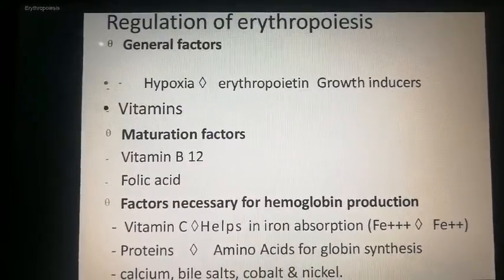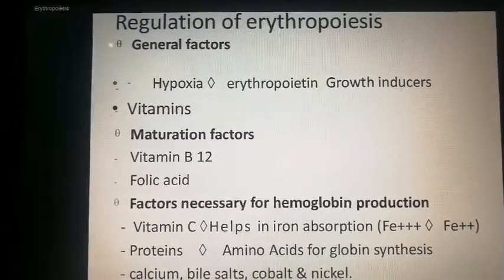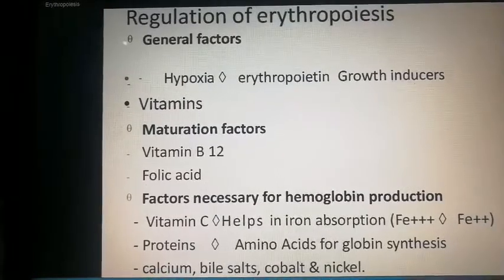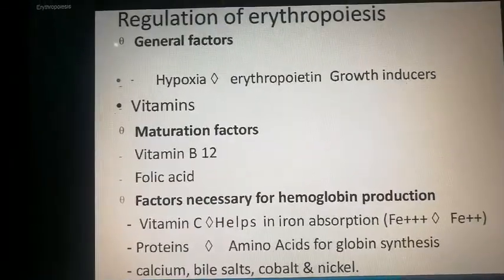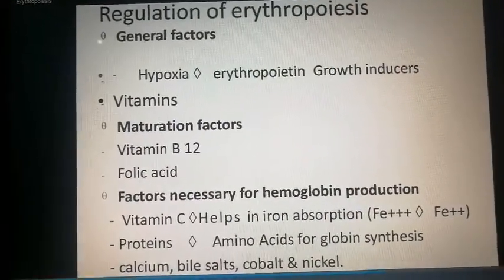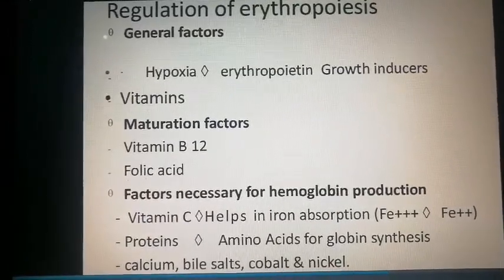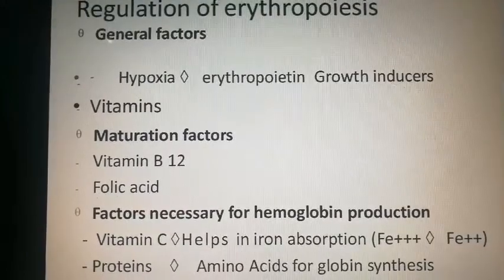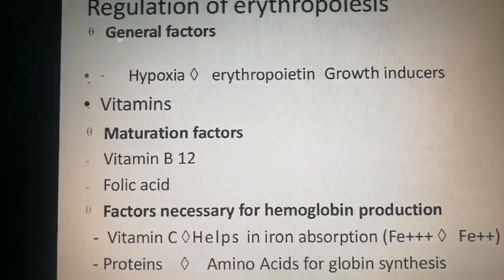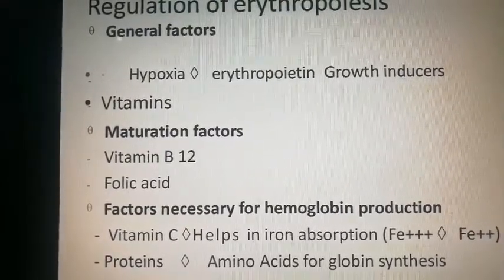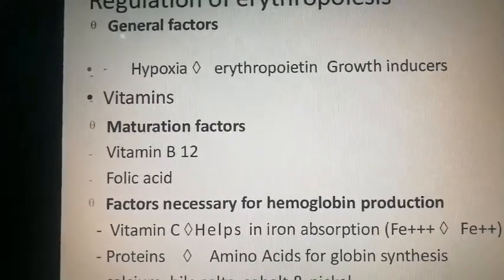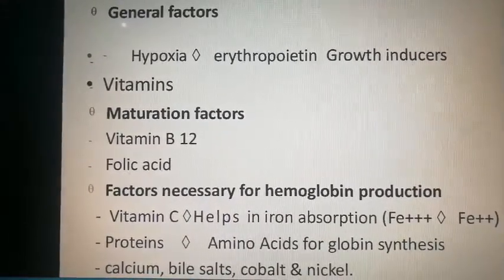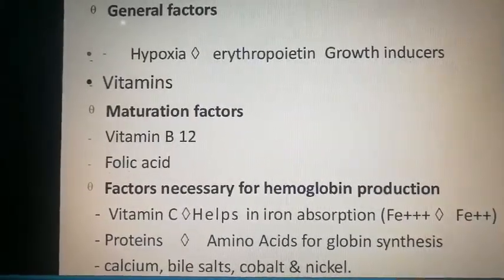Erythropoiesis is regulated by various factors. General factors include hypoxia, erythropoietin, growth inducers, and vitamins. Maturation factors include vitamin B12 and folic acid. Other important factors are vitamin C (which helps in iron absorption), protein for amino acids for globin synthesis, calcium, bile salts, cobalt, and nickel.